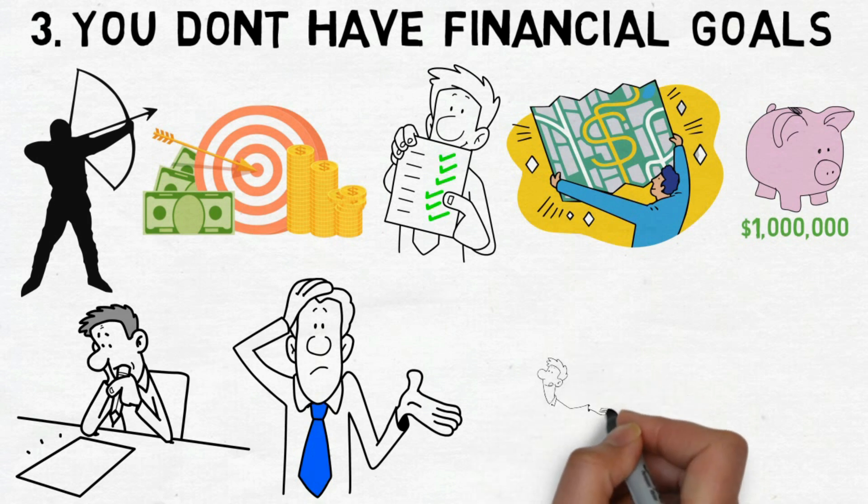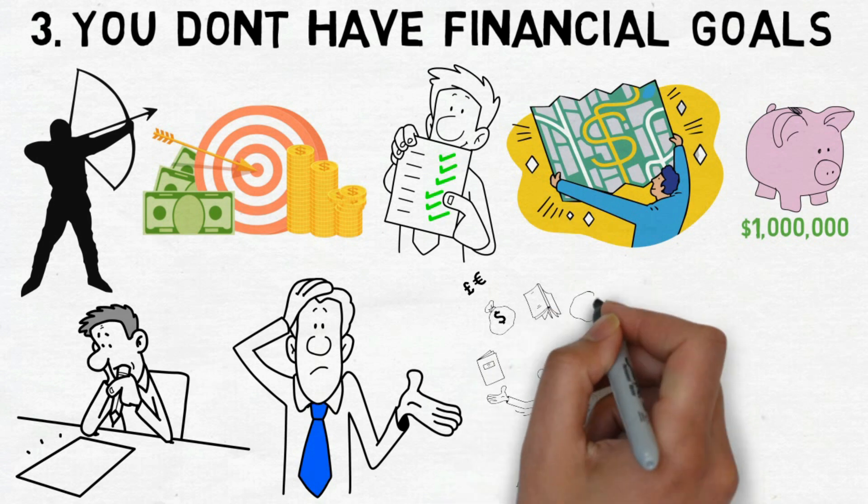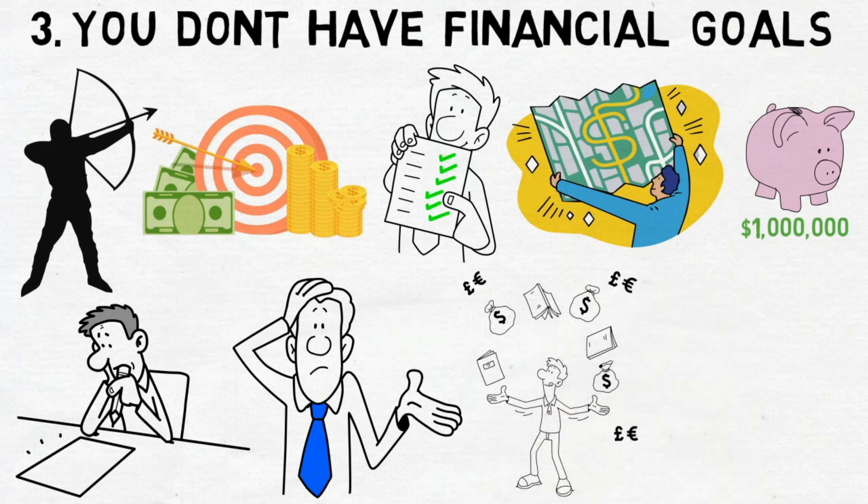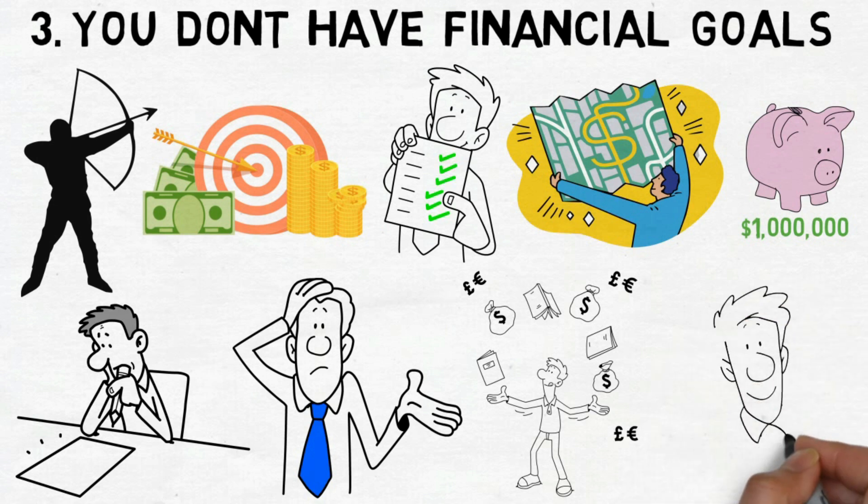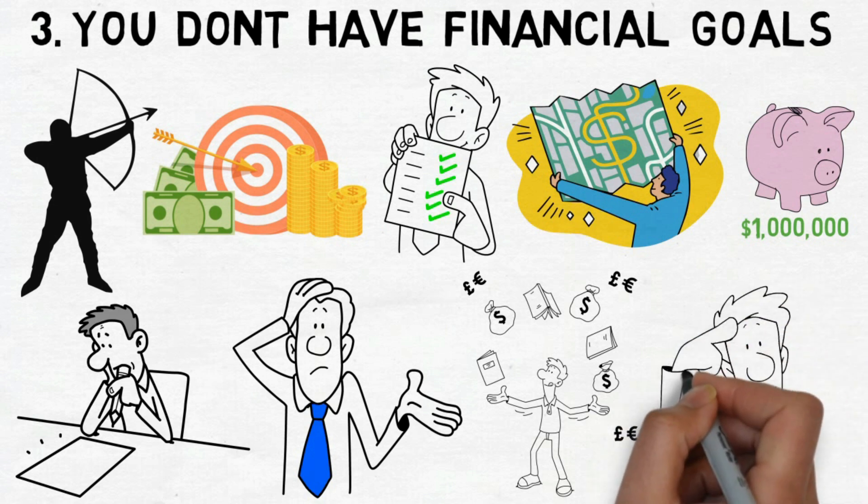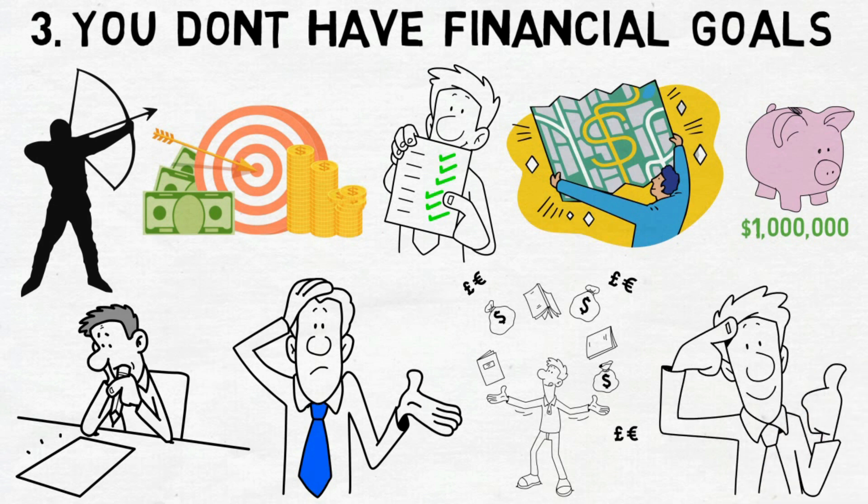When talking about getting rich, they might want more money, but they don't fully understand what that really means. On the other hand, rich people can easily explain what they want to achieve and how they plan to do it, including when they want to reach their goals.